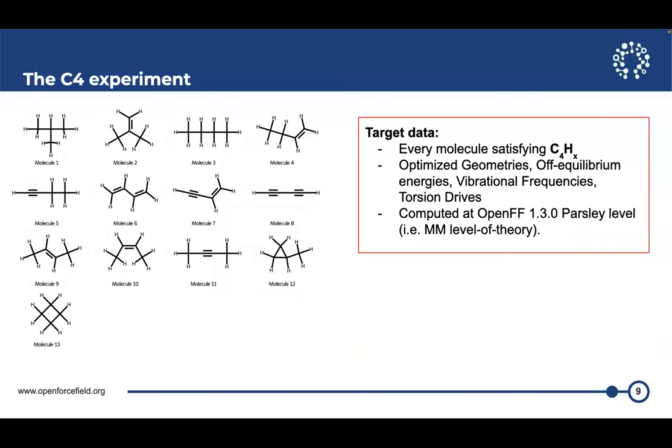So the first test that I'm looking at is called C4 test set. And C4 just means take the QM database and look at all molecules in there that have exactly four carbon atoms and whatever number of hydrogen atoms. And our target data are conformer energies, vibrational frequencies and also torsion profiles. And the one important point is that we are not taking a QM level internal surface but the MM level internal surface. So that sort of ensures that the exact model is part of our solution space that is actually accessible to our algorithm.